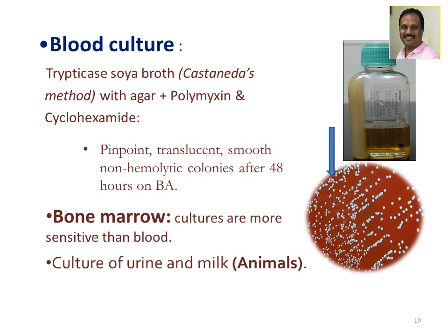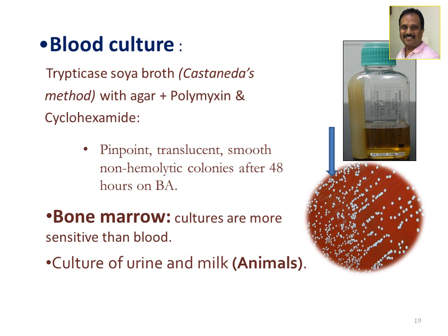Bone marrow culture has greater sensitivity than blood culture and is preferred when possible. For animals, urine and milk samples are preferable because collecting blood under aseptic conditions is difficult. The BacT/ALERT automated blood culture system has minimal role in culturing Brucella, so the biphasic or Castaneda method is still used today to isolate these organisms.